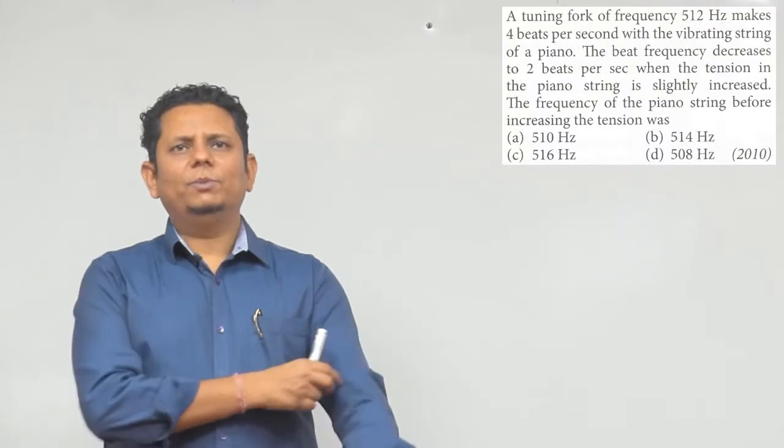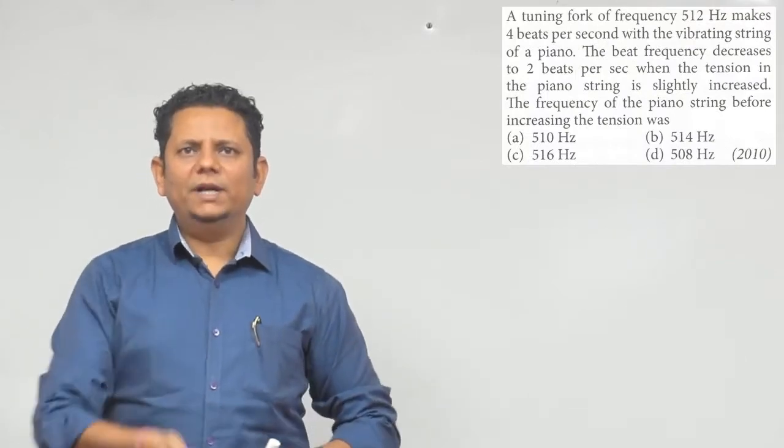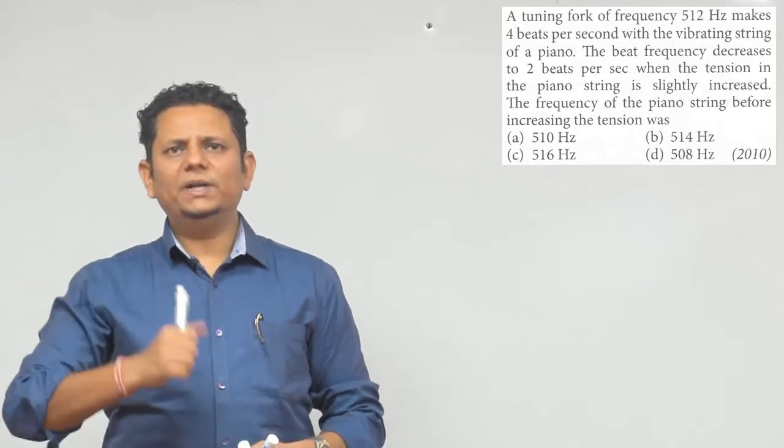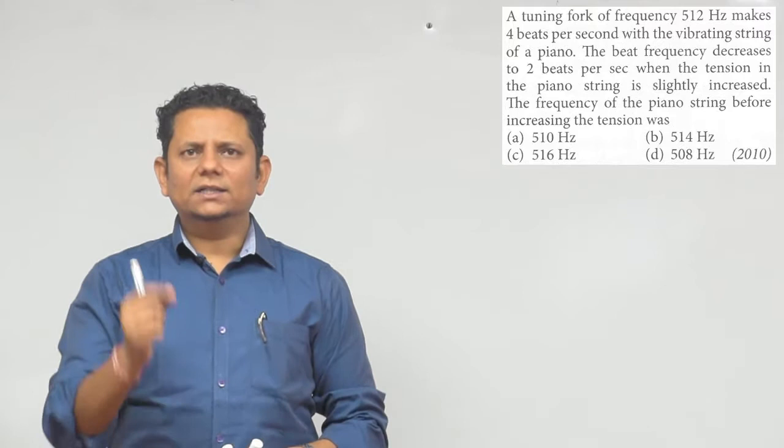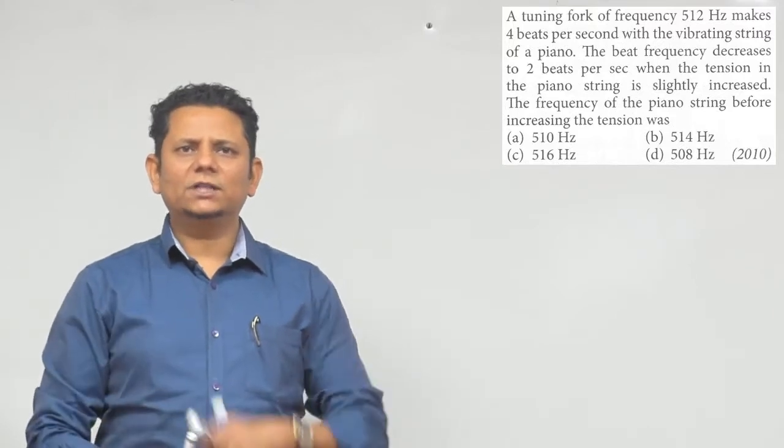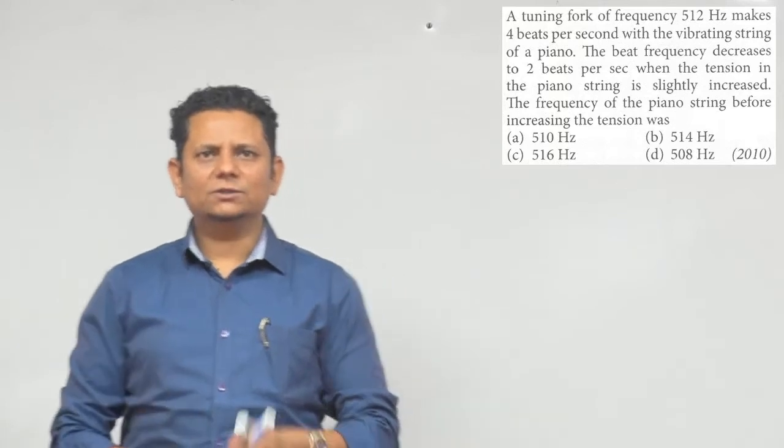Next question: A tuning fork of frequency 512 Hz makes 4 beats per second with the vibrating string of a piano. The beat frequency decreases to 2 beats per second when the tension in the piano string is slightly increased. The frequency of the piano string before increasing the tension will be: option A 510 Hz, B 514 Hz, C 516 Hz, or D 508 Hz.